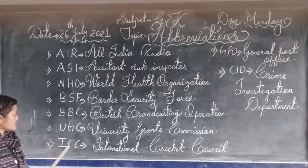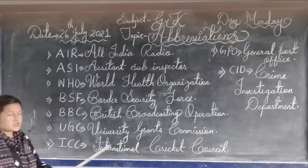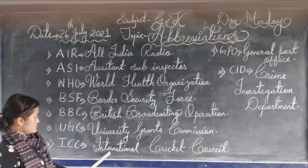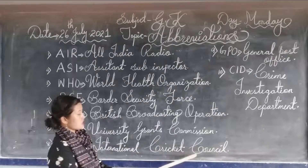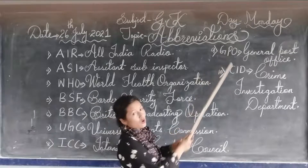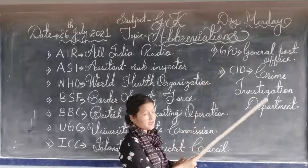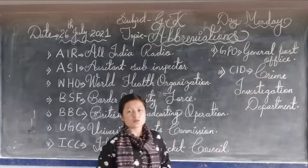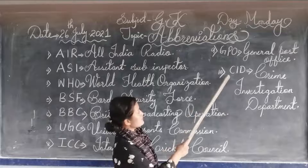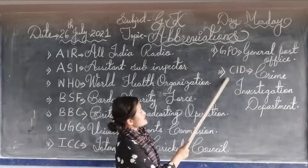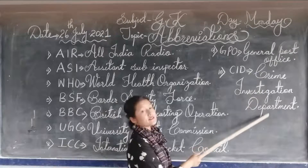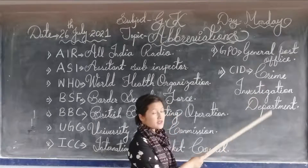Now the eighth one is I-C-C. The full form of I-C-C is International Cricket Council. Now the ninth one is G-P-O. The full form of G-P-O is General Post Office. Now the tenth one here is C-I-D. The full form of C-I-D is Crime Investigation Department.